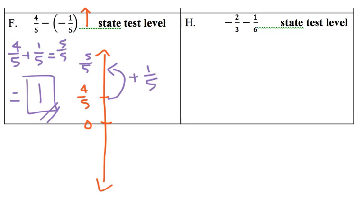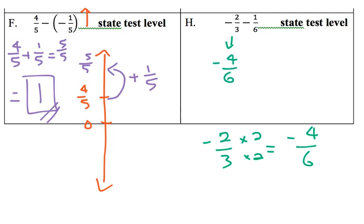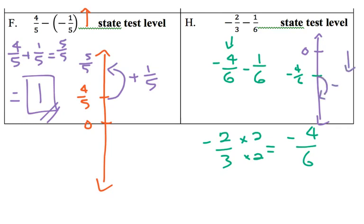For problem h, before we start subtracting, remember that with fractions you need to have the same units — the denominators need to be the same size. So for negative 2 thirds, I notice that if I multiply 3 by 2 that gives me 6, which is what we want. So I'm going to take that negative 2 thirds and multiply it by 2 over 2, which equals negative 4 over 6. Now I rewrite the problem: negative 2 thirds becomes negative 4 sixths minus 1 sixth. Modeling this on an open number line — zero is up here, we're starting at negative 4 sixths. Since it's regular subtraction, it's like an elevator going down — we go down 1 sixth. When you're in the negatives and go down, you're getting farther from zero, so it becomes negative 5 sixths.